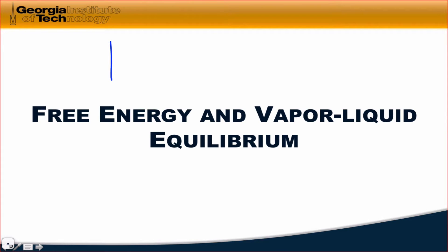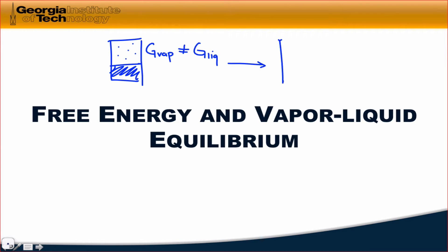A key idea of physical equilibrium is that if we have two phases inside a closed system, like a liquid and vapor for the same substance, such that the free energy of the vapor is not equal to the free energy of the liquid, then spontaneous phase transitions will occur until these two free energies are equal, such that delta G for evaporation and condensation are both zero. So in the equilibrium state, the free energy of the vapor is equal to the free energy of the liquid.